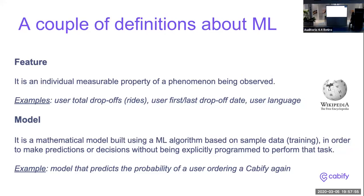I'm sure that probably not all of you are familiar with some machine learning terms. I wanted to give a brief explanation of two concepts we are going to use a lot in this presentation: feature and model. A feature in the machine learning context is an individual measurable property of a phenomenon. For instance, in the Cabify business, a simple feature could be the number of drop-offs or the number of rides a user performed with us.